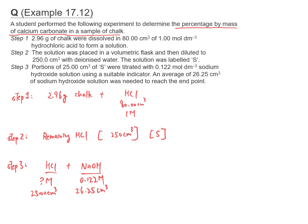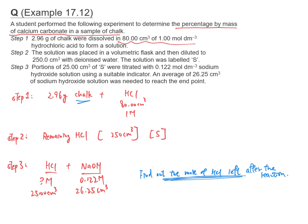We use step 3 to find out the moles of HCl left after the reaction. Once we know this, then we know the moles of HCl used to react with the chalk. We know the total — the total moles of HCl added would be 1.00 times 80.00 divided by 1000, which equals 0.08 moles.